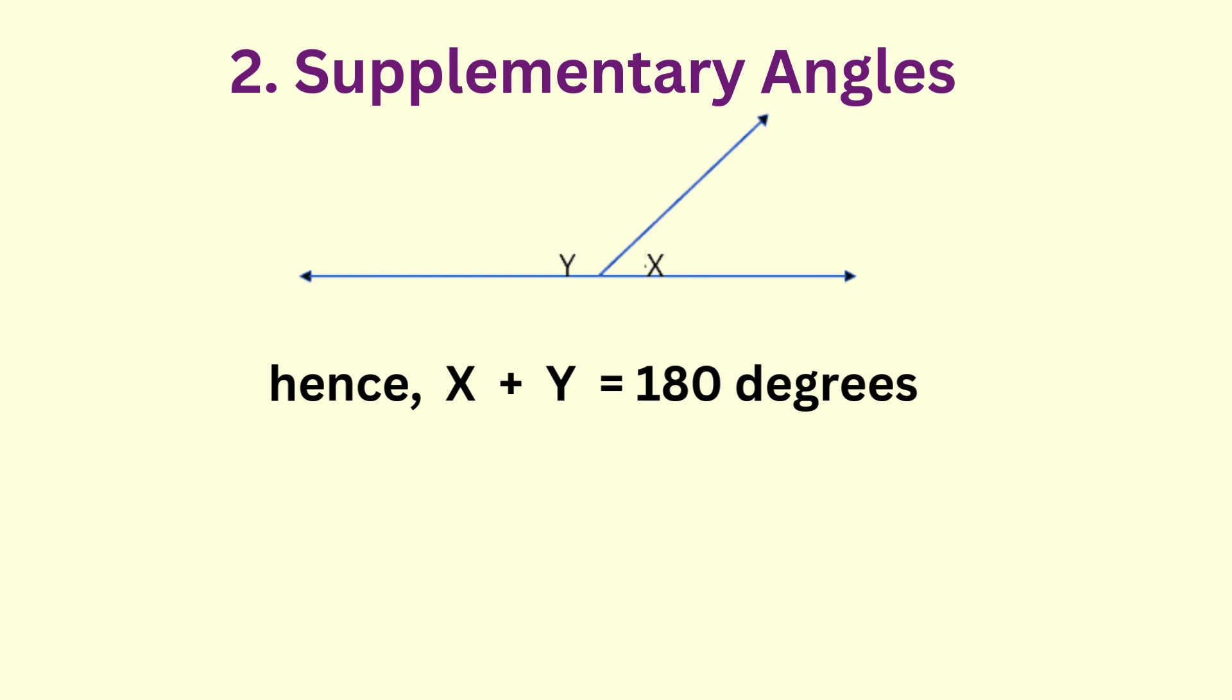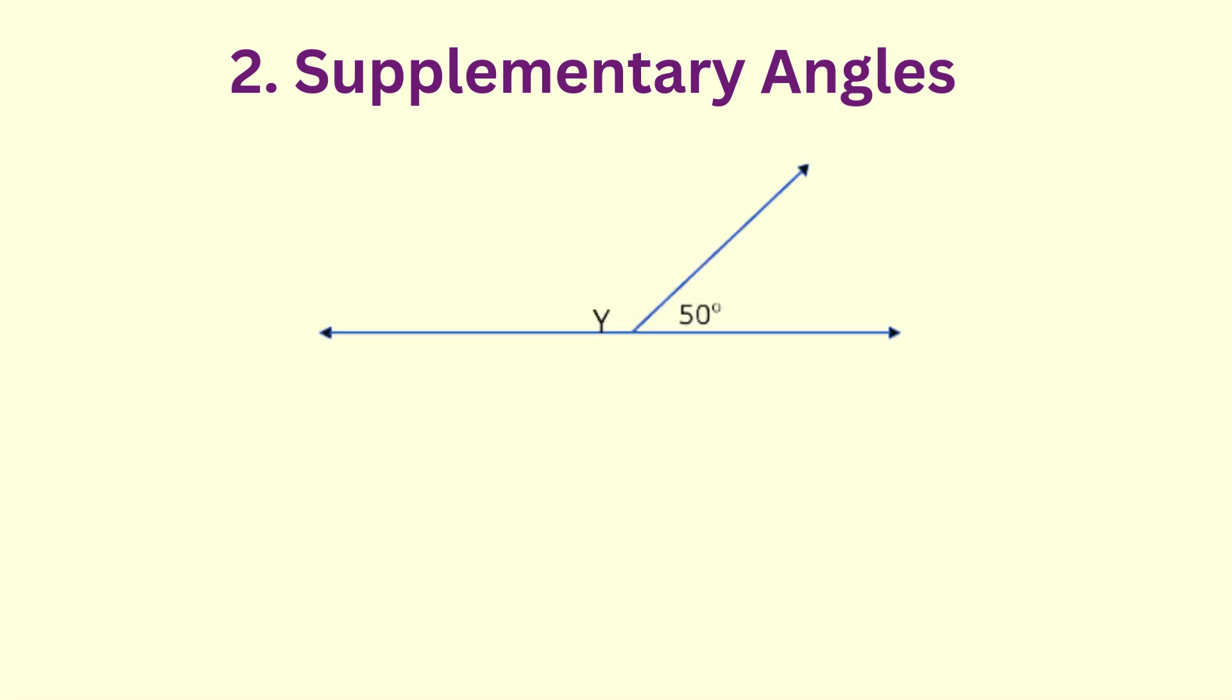If angle x is 50 degrees and we're asked to find angle y, we can subtract 50 from 180 degrees and we get 130 degrees.